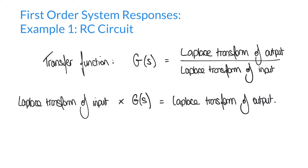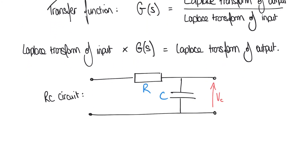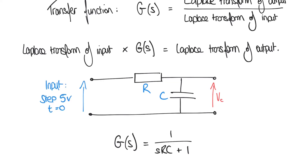In previous videos we've looked at a range of input types and calculated various transfer functions. In this video and the videos that follow, we're going to put both of these into practice — deriving the response or output of a system based on the input we supply. This first example is an RC circuit: a resistor and a capacitor connected in series. We've already derived its transfer function in a previous video: G of S equals 1 over SRC plus 1.